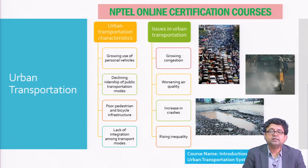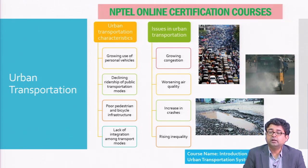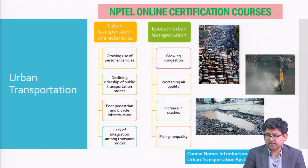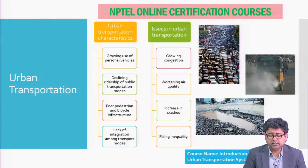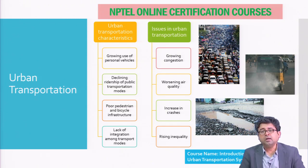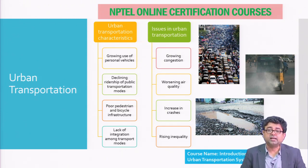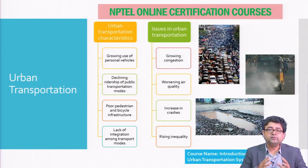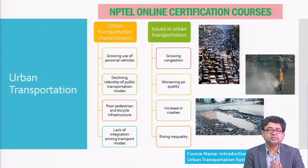So if these are the general characteristics of urban areas that we face, all of these are leading to certain problems. They are leading to increase in congestion, worsening of air quality, an increase in the number of accidents on our roads, and also a rising inequality — where perhaps poorer people are not able to access all of these modes efficiently because the fares are very high. All of these problems in urban areas need certain attention.